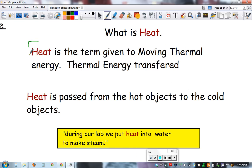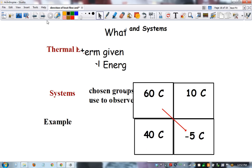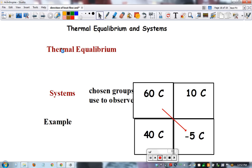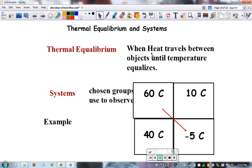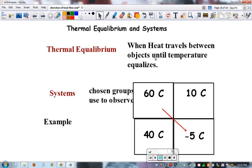So heat is the term given, this is review, of moving thermal energy or moving internal energy. Heat is passed from hot objects to another. We put heat into the water to make steam. The next vocab word is thermal equilibrium. Heat travels between objects until temperature equalizes, just like we did here.